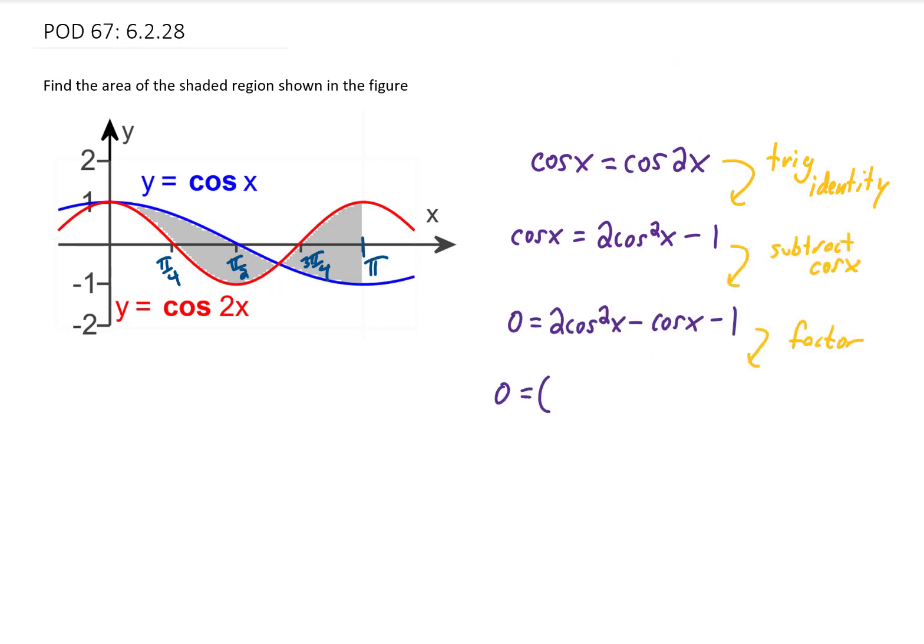and we can factor this right-hand side. Now that this is factored and set equal to 0, we can split it into two pieces. 2 cosine of x plus 1 equaling 0 gives us cosine of x equals negative 1 half. The other piece gives us cosine of x equals 1.